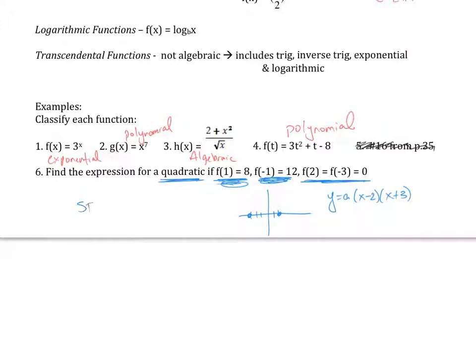So here is what we can do if we have to do the regression model. We're going to go stat on our calculators, edit, and then under L1 and L2, this is going to be your x and y values. Well, what are the x and y values? When I put in 1, I get 8. When I put in negative 1, I get 12. When I put in 2, I get 0. And when I put in negative 3, I also get 0. So you could do it that route. After you do that, you're going to quit out of there. So this, and then put in the points.